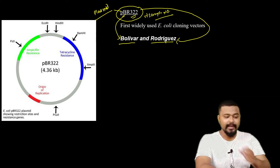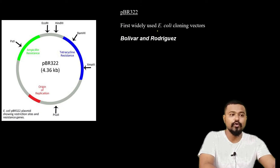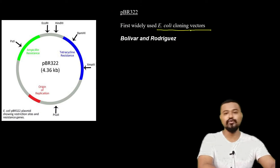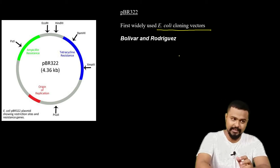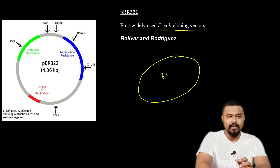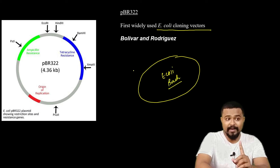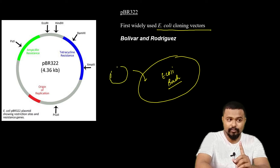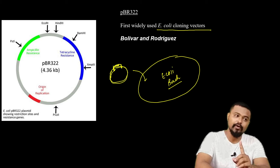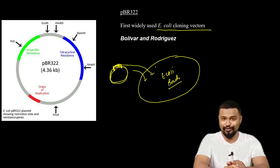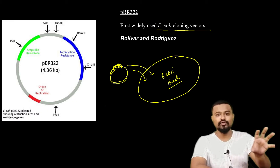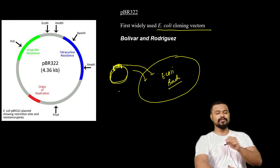pBR322 was the first widely used cloning vector. It was first used in E. coli cells — E. coli bacteria. This plasmid is a circular DNA molecule that helped successfully clone a gene of interest into E. coli cells.